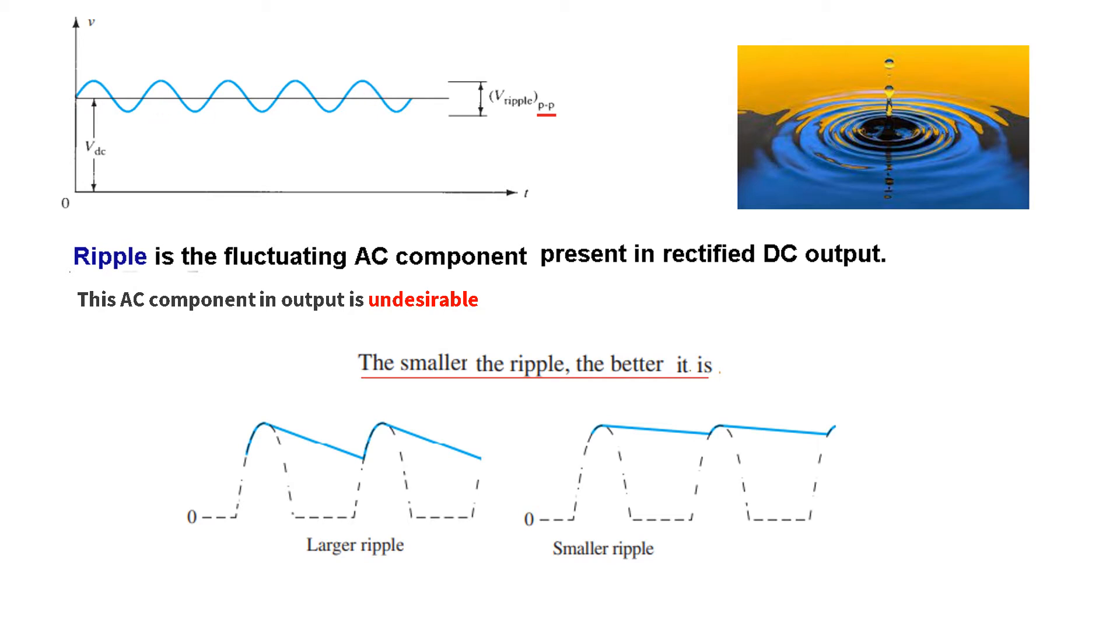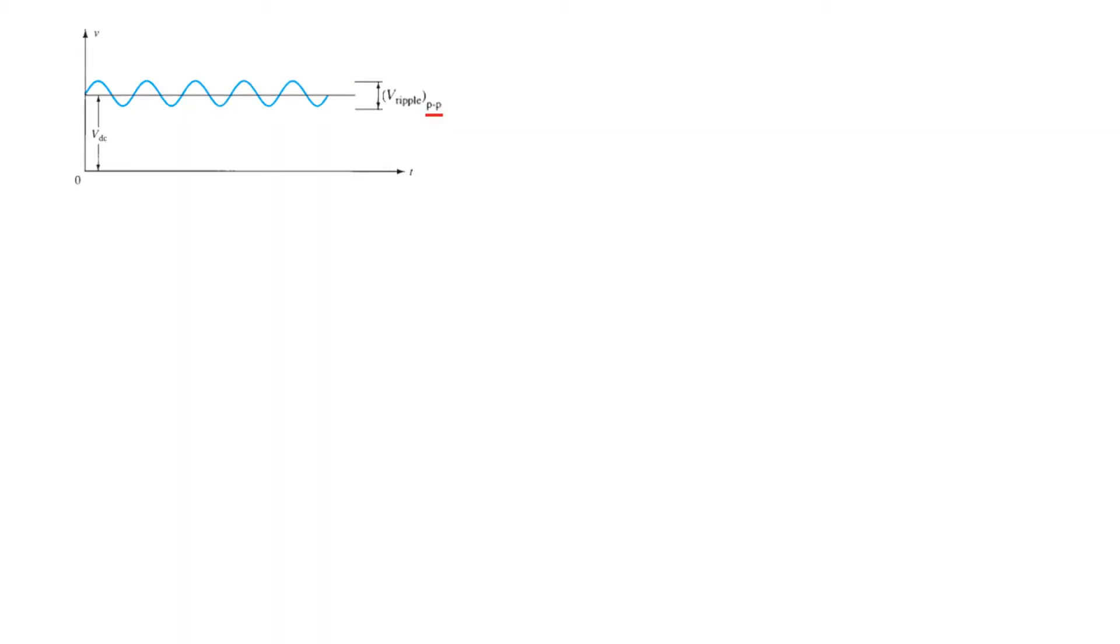So this is the rectified output. We cannot call it DC fully. It is actually pulsating DC. And this has two components, the DC component and this is the AC component. Now this fluctuation or the ripple is undesirable. We would prefer to have a straight line. And if you compare the two, this has larger ripples and this has smaller ripples. So the preference is that we should have as small ripple as possible.